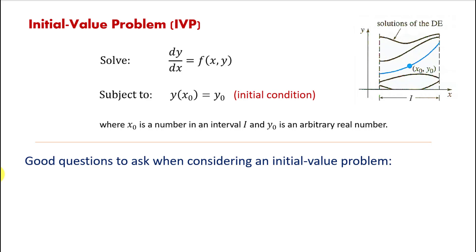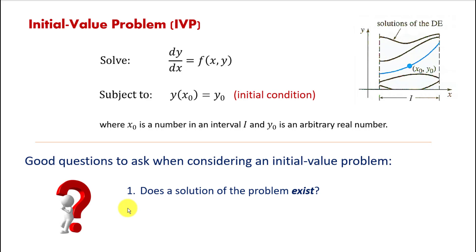There are two good questions to ask when we're considering the initial value problem. First, does the solution to this kind of problem exist? And second, if that solution is going to be unique. The theorem that we're going to look at may help us to answer those questions.